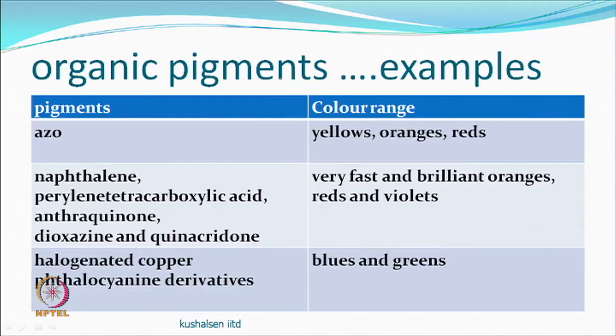Originally, binders made stiff films, causing handle issues. But today, research has produced very flexible films. Pigment chemistry includes azo-based pigments giving yellows, oranges, and reds; naphthalene-based and anthraquinone-based pigments; and two interesting series — perylene-based pigments and quinacridone-based pigments — which are very fast and brilliant, giving oranges, reds, and violets.